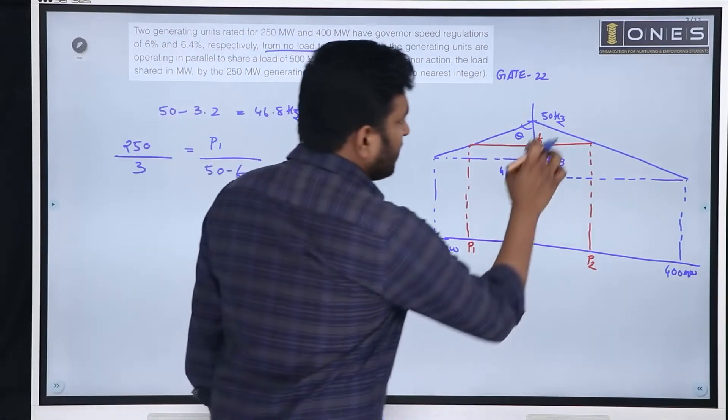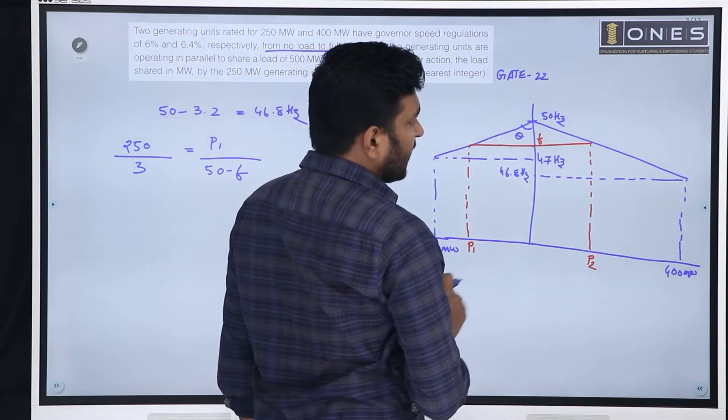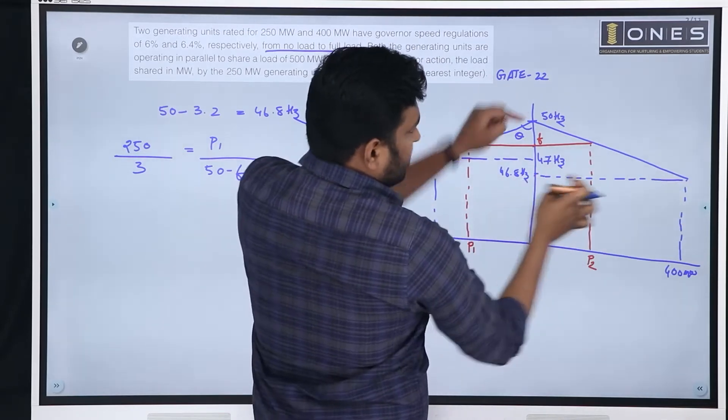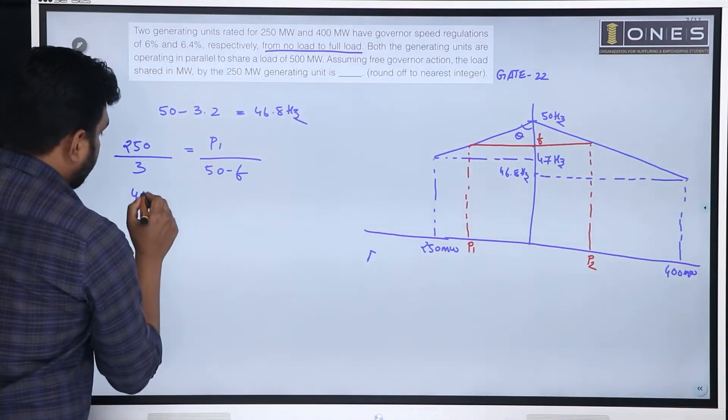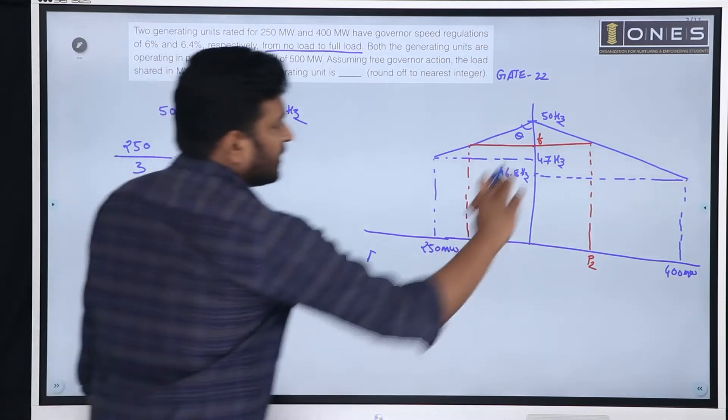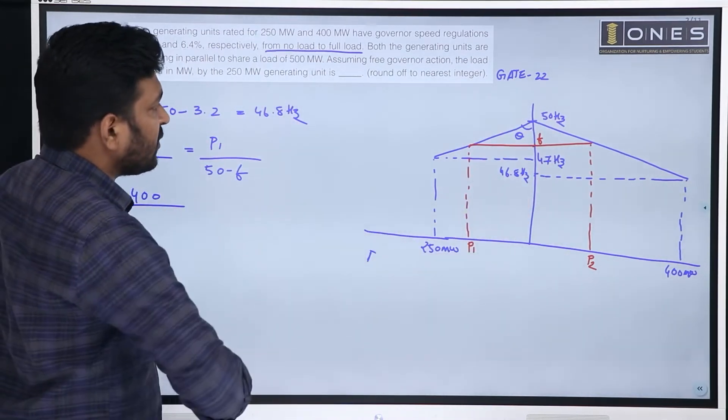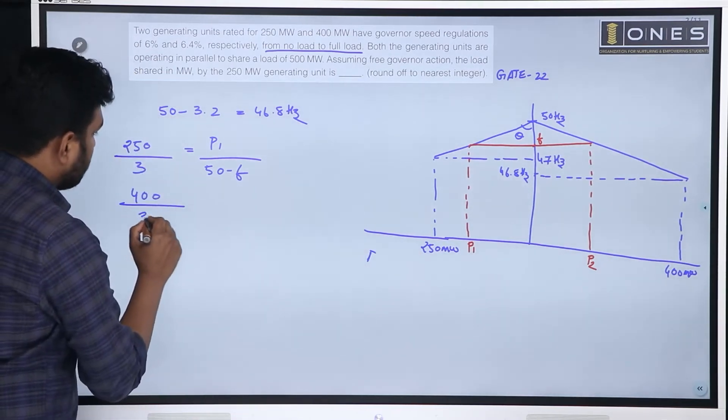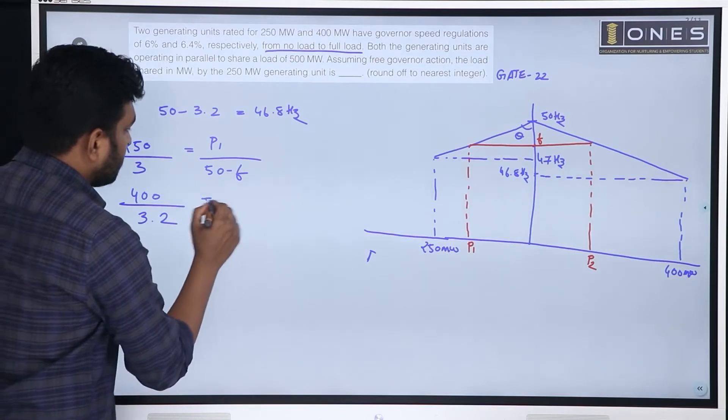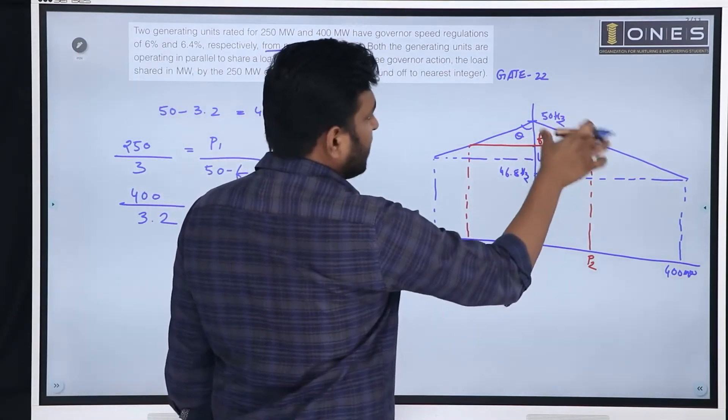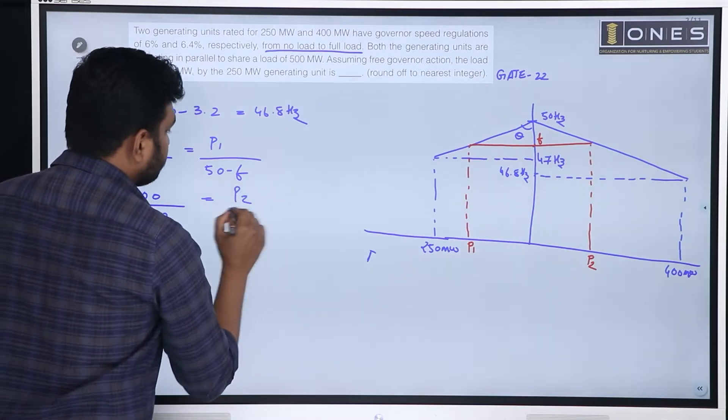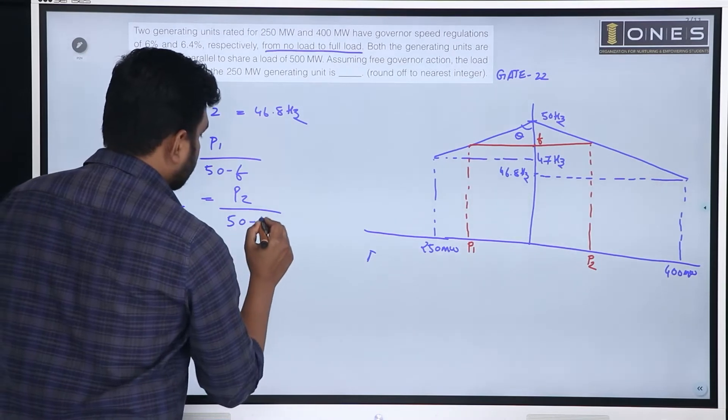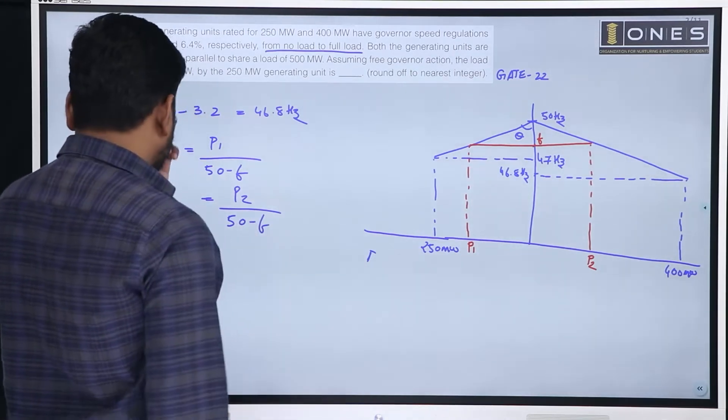The second case will be angle theta. So, tan theta, here the triangle tan theta opposite by adjacent. Opposite is 400. Adjacent is 50 minus 46.8, which is 3.2. Which is equal to the right triangle opposite by adjacent, P2 divided by 50 minus F.